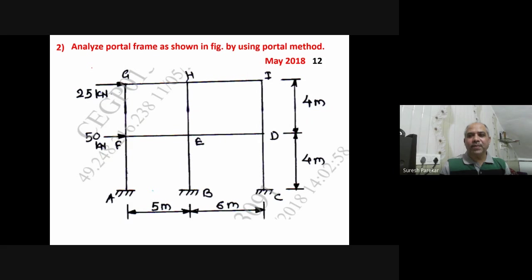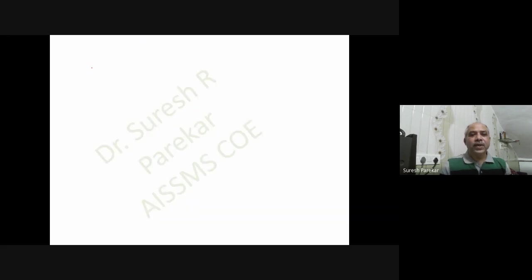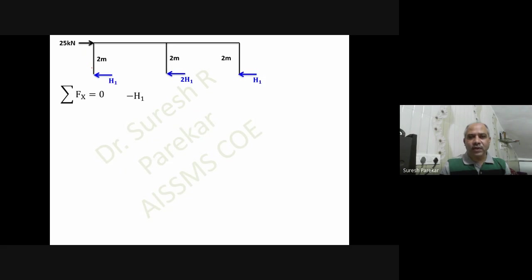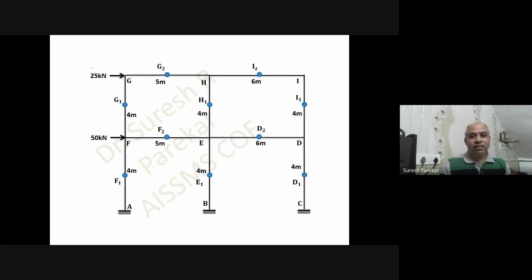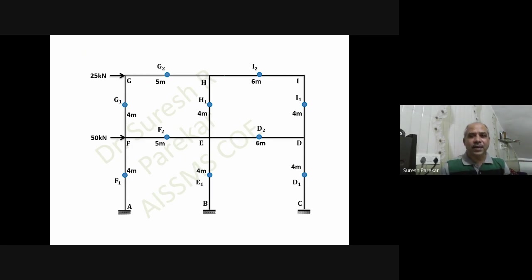The second problem was asked in May 2018 for 12 marks. The loading changes; here we have two bays instead of three. We proceed the same way: 25 kilonewtons gives H1 equal to 6.25 kilonewtons, then 4H2 gives H2 equal to 18.75 kilonewtons. The inflection points are at mid-height of columns and mid-span of beams. Joints are labeled carefully — using column as 1 and beam as 2 — since labeling plays an important role.